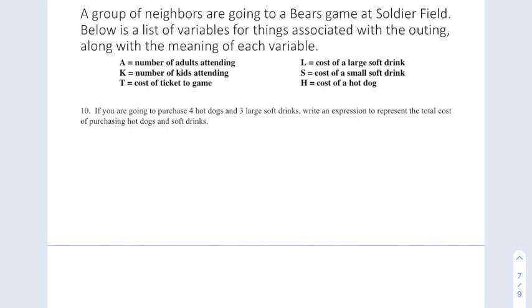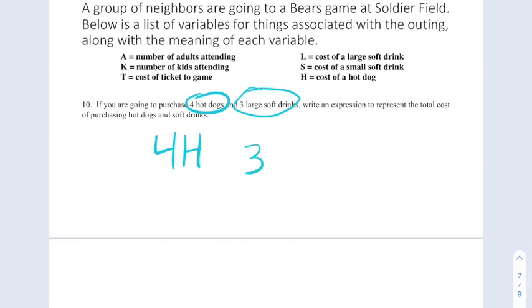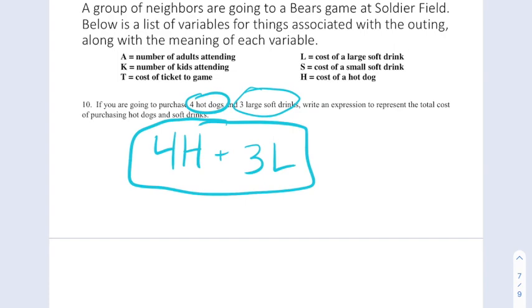The final problem: we're purchasing 4 hot dogs and 3 large soft drinks, and we need to write an expression for the total cost. The cost of hot dogs is the number of hot dogs times the cost of a hot dog: 4 times H. The cost of soft drinks is the number of drinks times the cost: 3 times L. For the total, we add them together: 4H plus 3L.